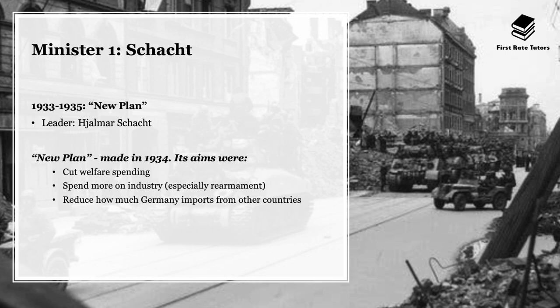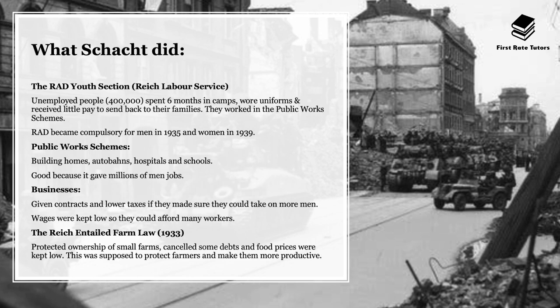The New Plan also involved reducing how much Germany imported from other countries. Schacht implemented the Reich Labour Service, called the RAD Youth Section. Around 400,000 unemployed people spent six months in camps, wore uniforms, and received little pay to send back to their families. They worked on public works schemes such as building the autobahns. The RAD service became compulsory for men from 1935 and for women from 1939. This was really essential in reducing unemployment numbers.